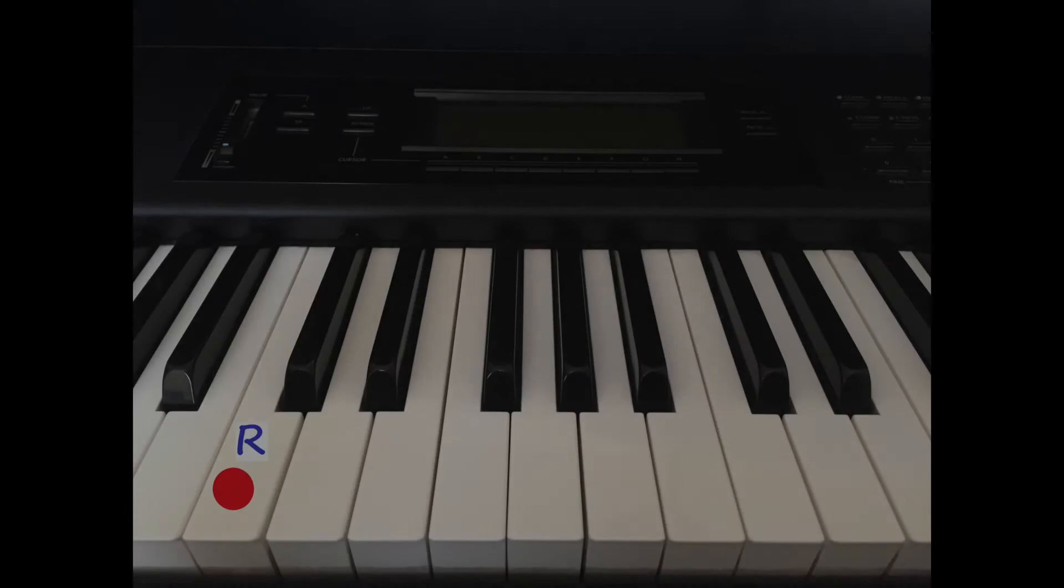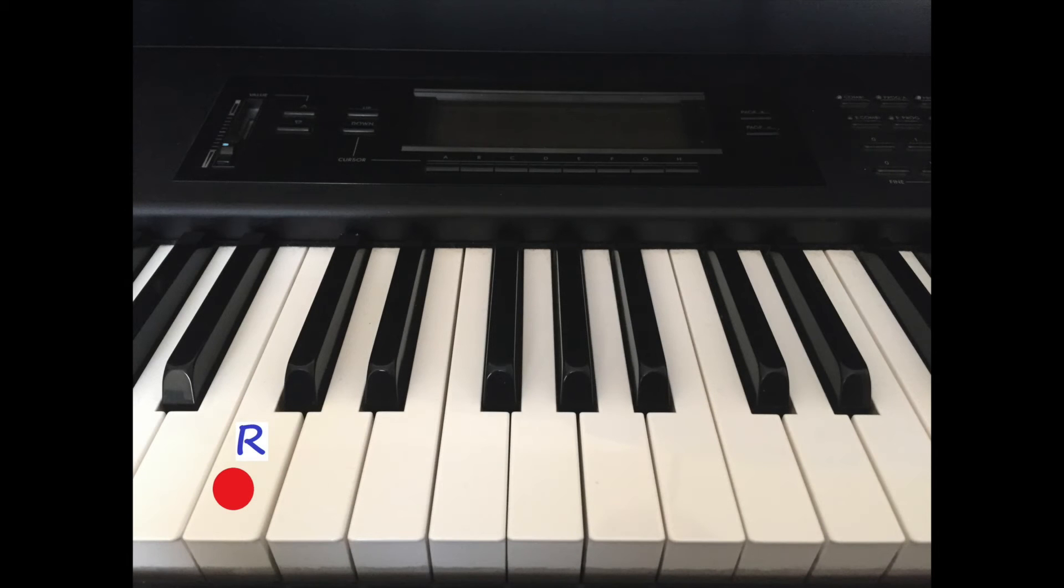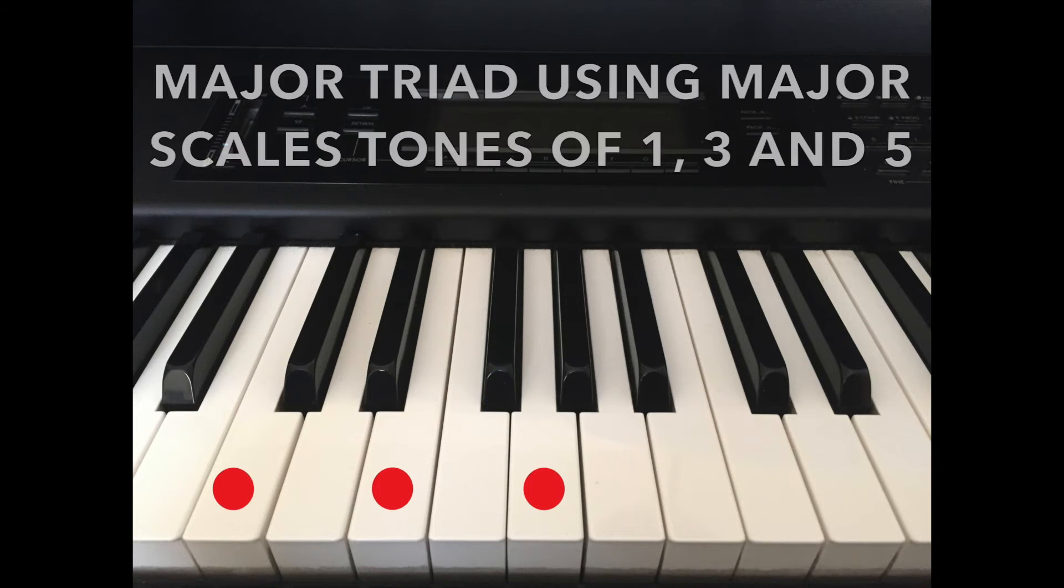Let's start by looking at the major triad. We're going to count up four semitones from the root. One, two, three, and four. Hold that note down, count up three semitones. One, two, and three. And we hold that down, and there is our C major triad.